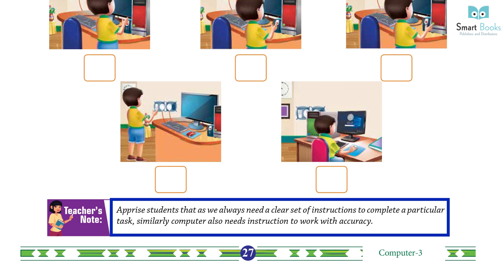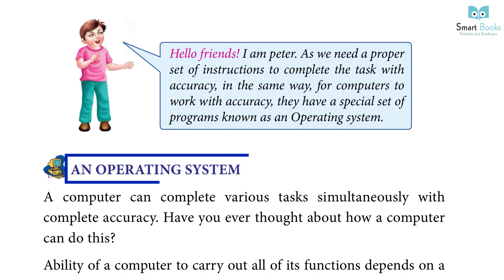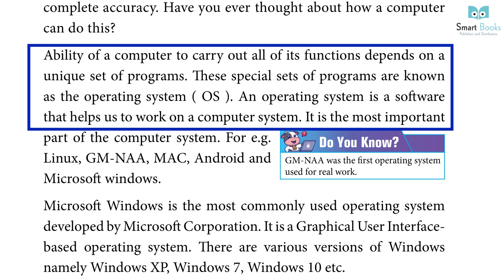Hello friends, I am Peter. As we need a proper set of instructions to complete a task with accuracy, in the same way, for computers to work with accuracy, they have a special set of programs. Have you ever thought about how a computer can do this? The ability of a computer to carry out all of its functions depends on a unique set of programs. These special sets of programs are known as the operating system (OS).